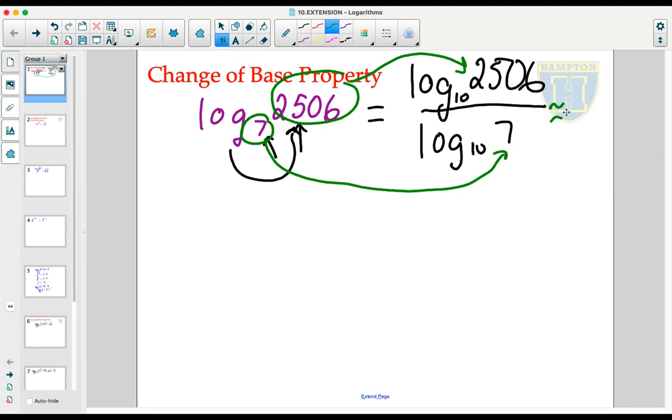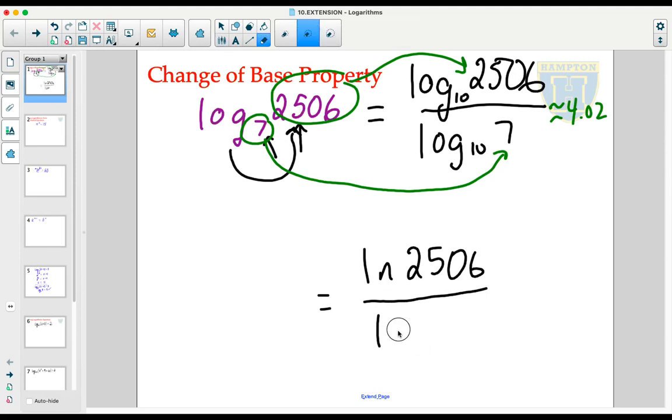And that simplifies, if we were to use a calculator, because we could now, because it's base 10, to about 4.02. But as I mentioned at the beginning, that is not the only base you can change to. You can change to any base, which means we could also use the natural log and its base e to simplify the expression as well.